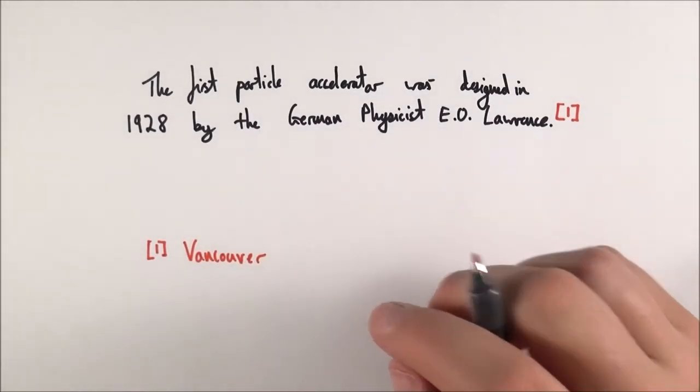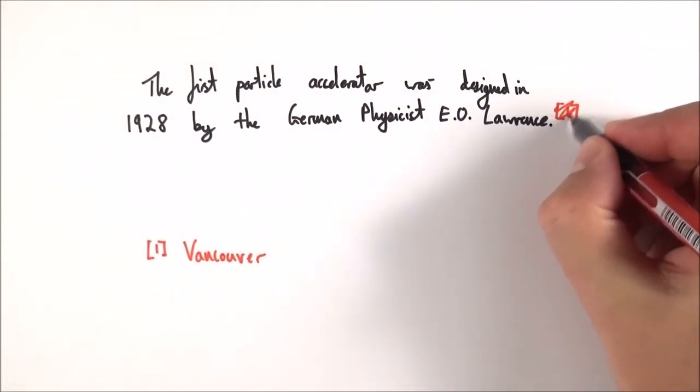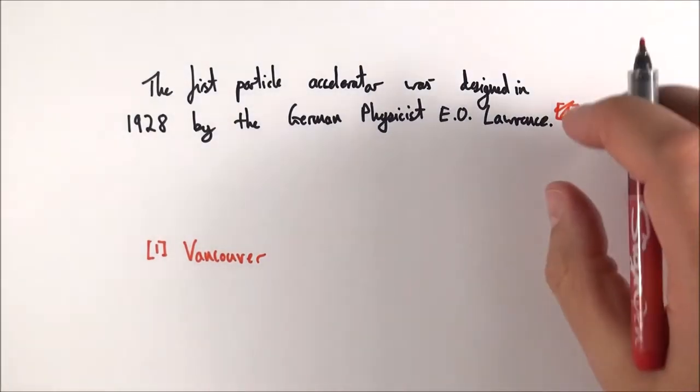The other system which we use is called the Harvard referencing system. Now this one here it doesn't have a number, instead what it has is it has the author and also the date that this information came from.